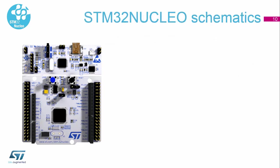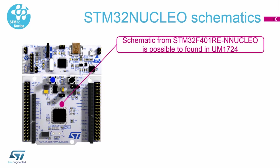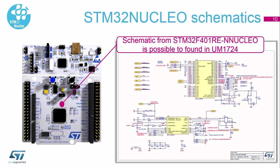If you want a better description of all the features and also schematics, you can find it in the user manual for the Nucleo on our website. It's called the UM1724, and there is also an external link on our website where you can download this manual.